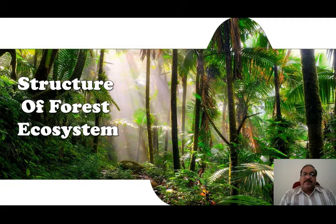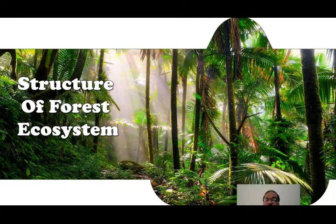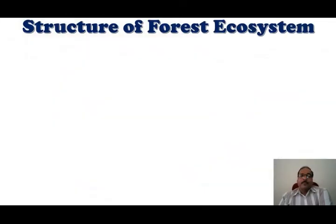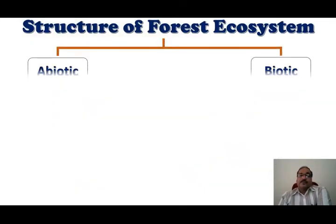Just like any ecosystem, the forest ecosystem also consists of two major components. One is the biotic component and the second is the abiotic component. The biotic component includes all the living organisms and the abiotic components include all the non-living components.